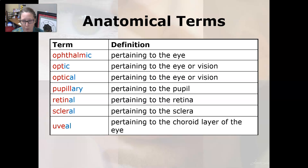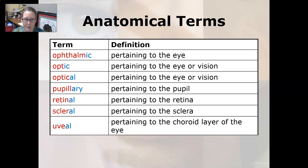Optic and optical are both pertaining to the eye or vision. Pupillary is pertaining to the pupil. Retinal is pertaining to the retina. Scleral is pertaining to the sclera. And uveal is pertaining to the choroid layer of the eye. And that wraps up all of our word cards for the eye.